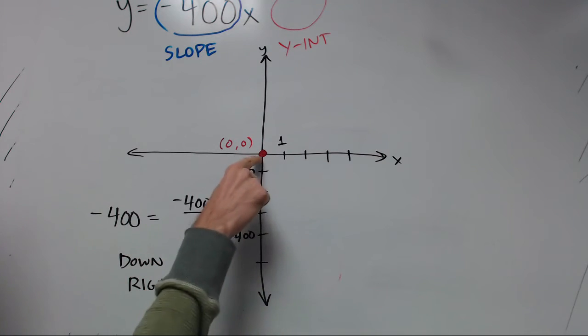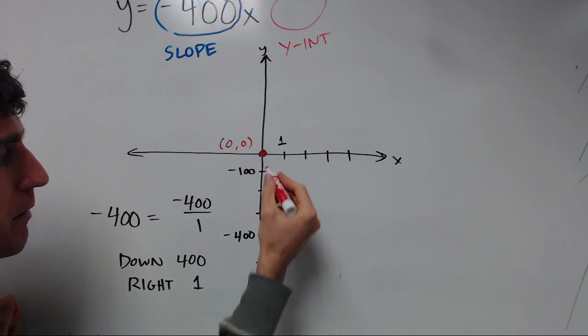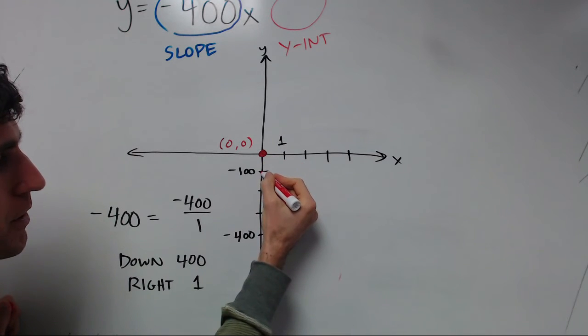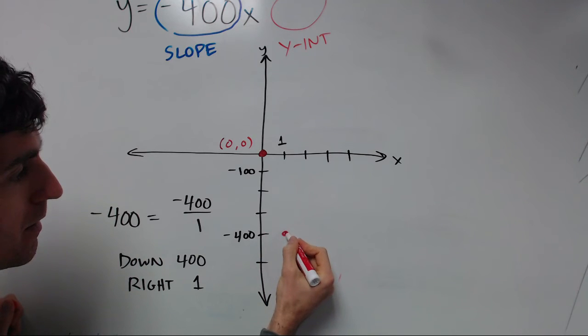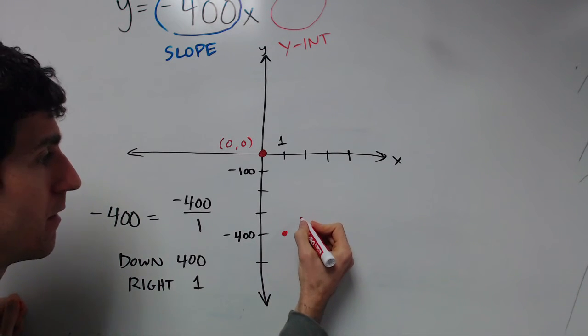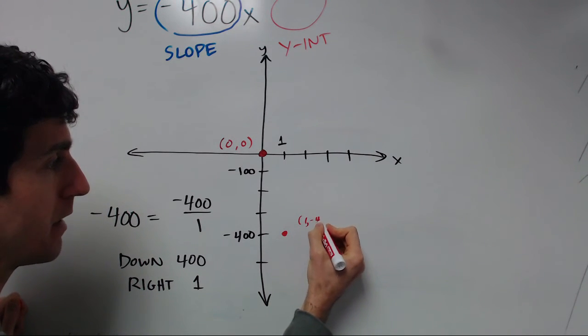Okay. So starting at the origin, now we want to go down 400 and right 1. So down 100, 200, 300, 400, and then go to the right 1. And that'll put us right there at the point 1, negative 400.